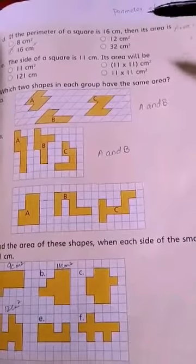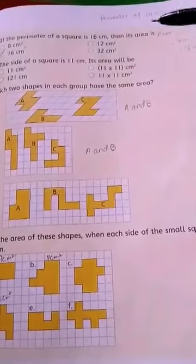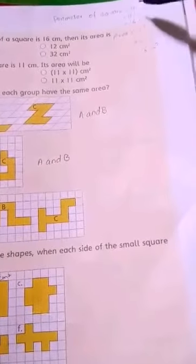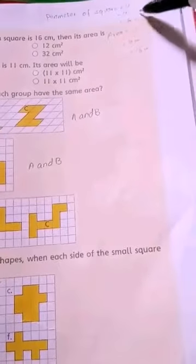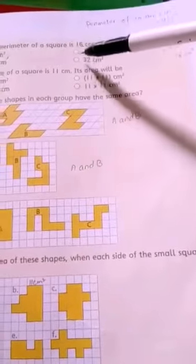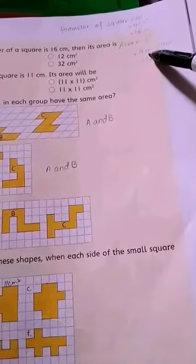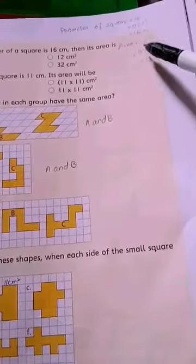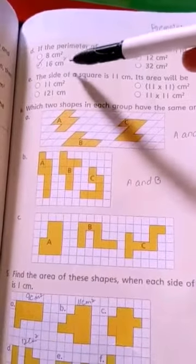If the perimeter of a square is 16 cm, then what is the area? Perimeter of a square equals 4L. If 4L equals 16 cm, then L equals 4 cm. The formula for area is L square: 4 cm multiplied 2 times gives 16 cm square. So the area is 16 cm square.